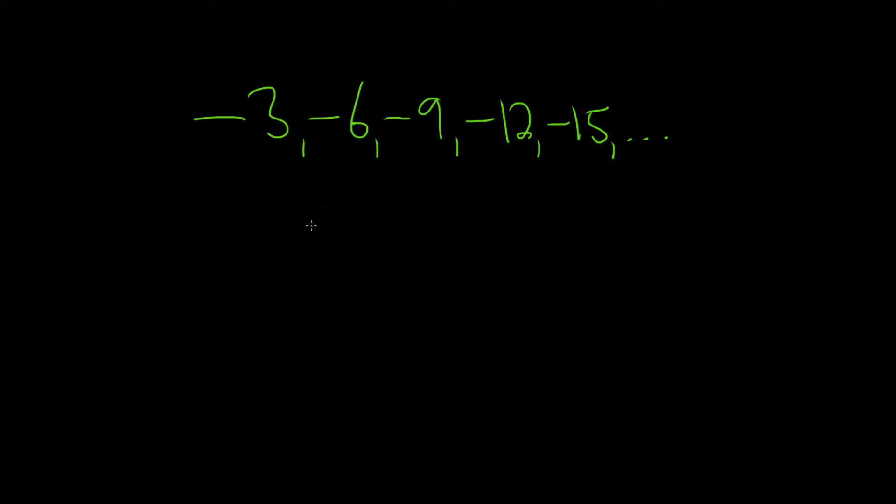So the formula for the nth term is given by the following equation. a sub n is equal to a sub 1, this is the first term, plus parentheses n minus 1 times d.